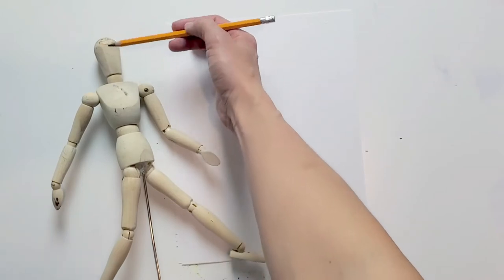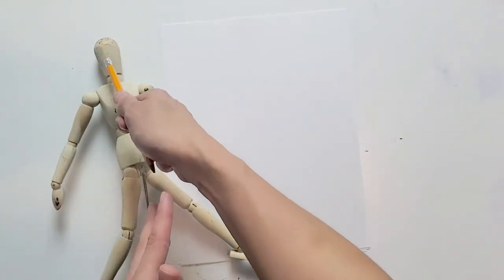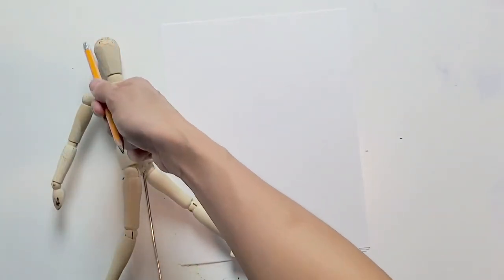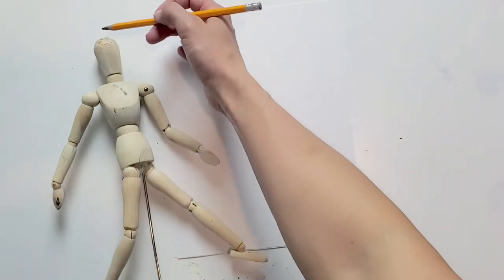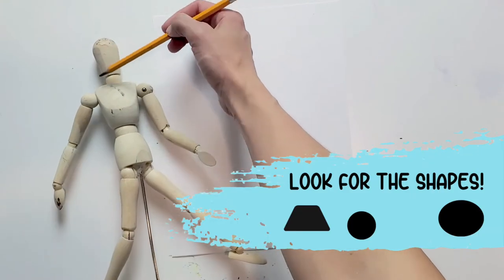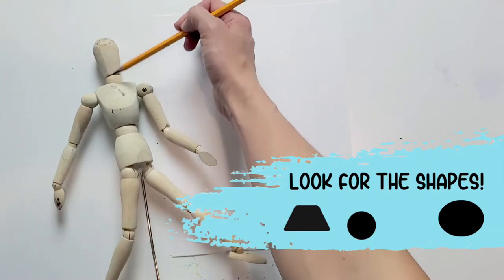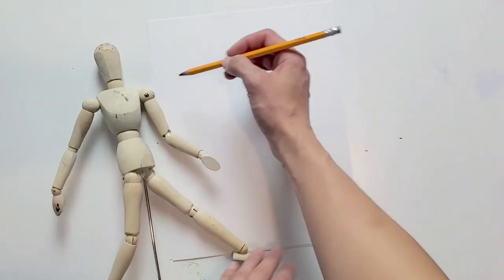So I'm going to start up here with the head. And when I look at this head, you'll notice that it is not a circle. It's not a rectangle. It's not even really an egg shape, which is what I normally use. It's kind of an egg shape that's cut off here at the neck.